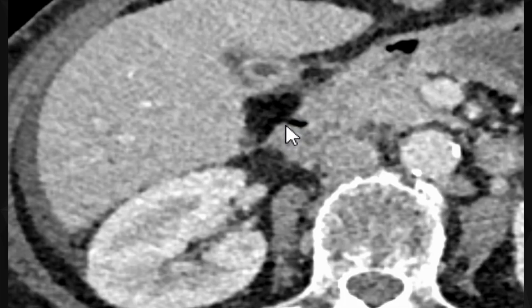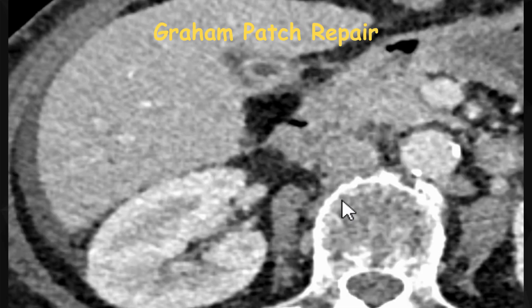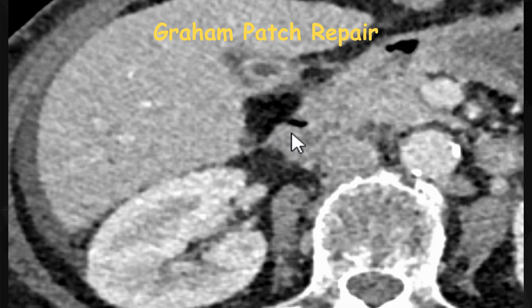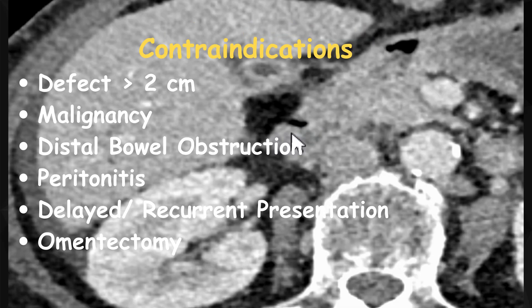This appearance is the hallmark of a successful Graham patch repair. It is an excellent procedure for small perforations of about one centimeter, such as in this case — perforations bigger than that would be more problematic. It is a simple, effective, and well-established method. However, there are a few contraindications: large perforations greater than two centimeters or with extensive tissue loss are not suitable because the tissue would be too friable to hold the patch. If there is malignancy at the perforation site, that would require resection depending on the stage.